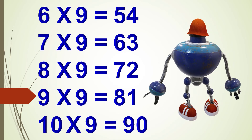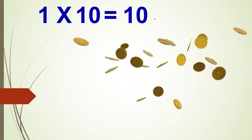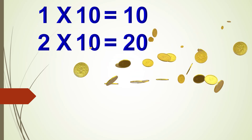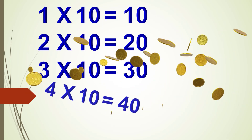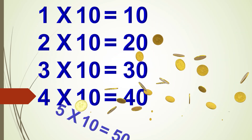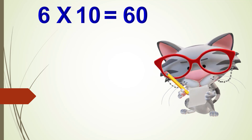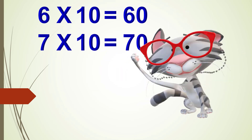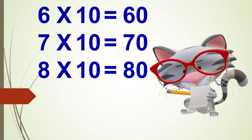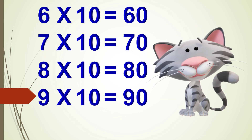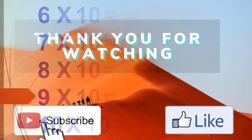Ten times nine are ninety. One times ten is ten, two times ten are twenty, three times ten are thirty, four times ten are forty, five times ten are fifty, six times ten are sixty, seven times ten are seventy, eight times ten are eighty, nine times ten are ninety, ten times ten are one hundred.